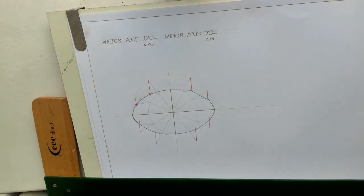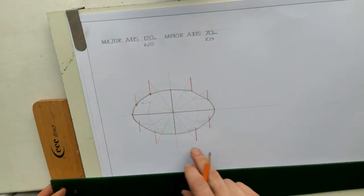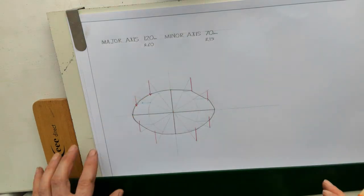So that's the first one done, which is an ellipse, given the major and minor axis.